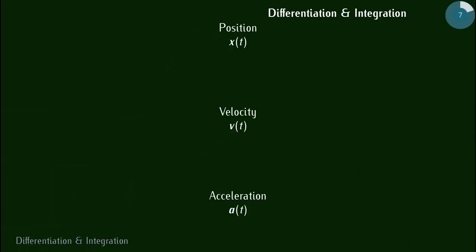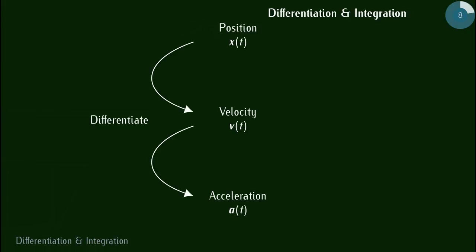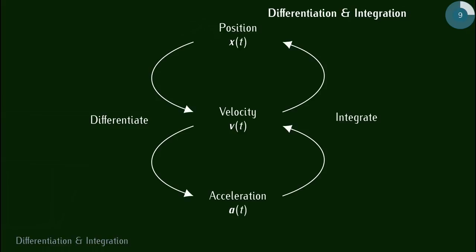On va regarder les méthodes mathématiques — la dérivation et l'intégration. C'est quelque chose qui va lier les différentes mesures physiques : la position X, la vitesse V ou l'accélération A. En dérivant la position, on obtient la vitesse. Puis quand on dérive la vitesse, on va obtenir l'accélération. Et inversement, si on intègre l'accélération, on va obtenir la vitesse, et si on intègre la vitesse, on va obtenir la position.